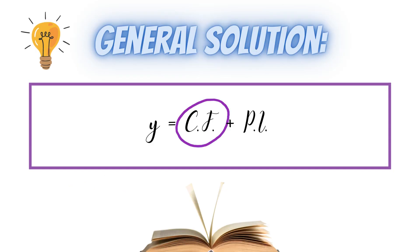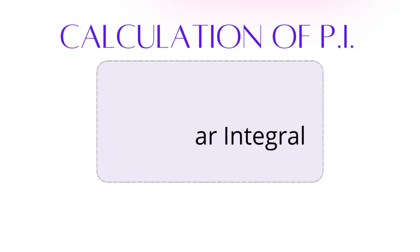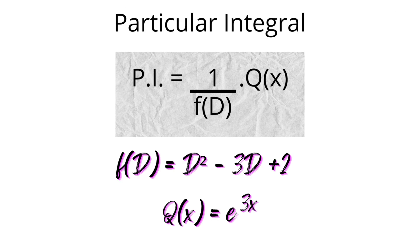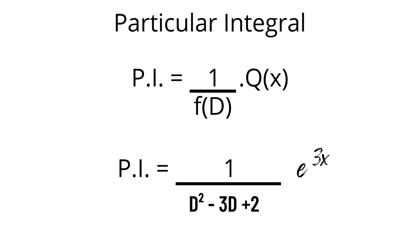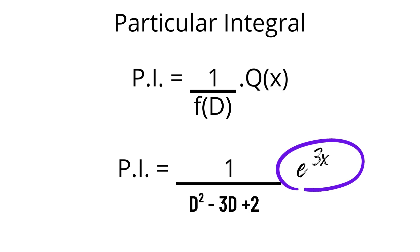Now we need to find the particular integral PI. To calculate PI, we use the formula PI equals 1/f(D) times Q(x). When Q(x) is exponential in the form e^(ax), we simply replace capital D with the value a — that is, put D equal to a — provided that f(D) does not equal zero when D is replaced by a. If it does equal zero, that is a different case handled in a separate video.